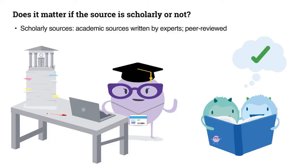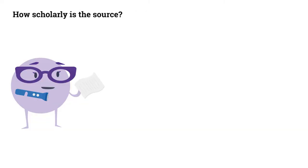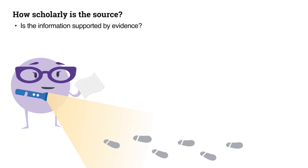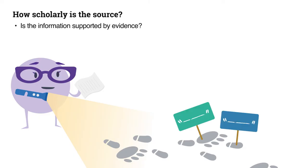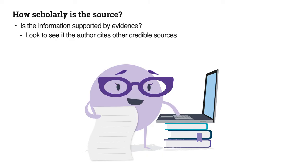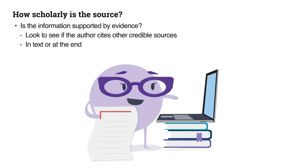Let's review the questions to consider for scholarly sources. The first thing to identify is whether or not the information is supported by evidence. Not only should the author mention other sources that validate the information presented, but they should also cite the sources from which that evidence was found. Look to see if the author references other sources and if those referenced sources seem credible. You can look for references in the text itself as well as a list at the end of the information.